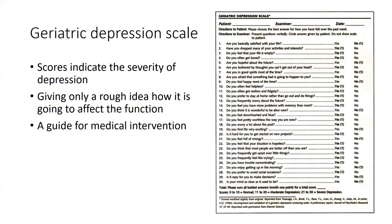The Geriatric Depression Scale has 30 components. Scores from 0 to 10 are normal, 10 to 20 indicate moderate depression, and 21 to 30 indicate severe depression. The scores indicate the severity of depression and give a rough idea of how it will affect functionality, serving as a guide for medical intervention.